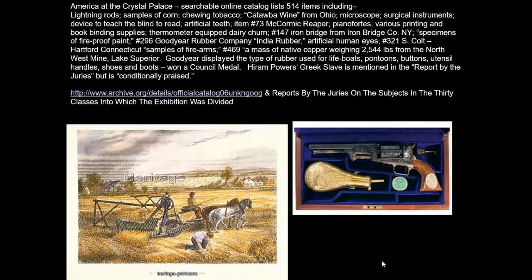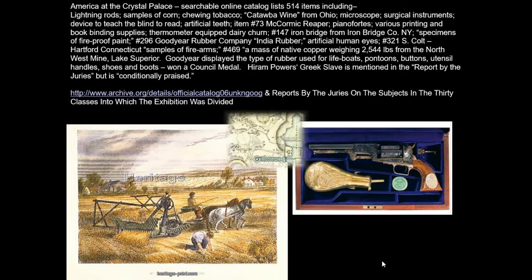Some of the things America sent to the exhibition included the Colt repeating pistol, but also things we still use in our day-to-day lives: microscopes, surgical instruments, false teeth, artificial teeth. The Goodyear rubber company premiered some of their Goodyear rubber tires there. All kinds of things from industry, but also works of art — including Hiram Powers' Greek Slave, which we looked at in the previous section on Romantic artwork in America.